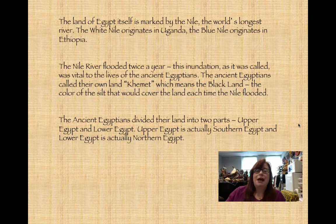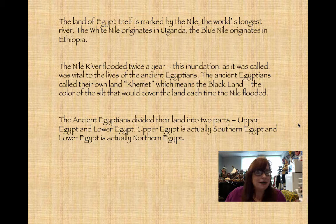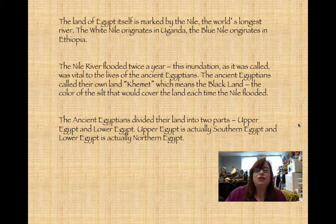They called it the inundation, and that was very vital to the lives of the ancient Egyptians. After the flood, when the Nile would recede back into its banks, there would be a black fertile silt. They would plant their crops in that silt, and that's where we get the name Kemet — what the ancient Egyptians actually called Egypt. They called the desert areas Desheret, meaning the red land. Egypt was divided into Upper Egypt and Lower Egypt.